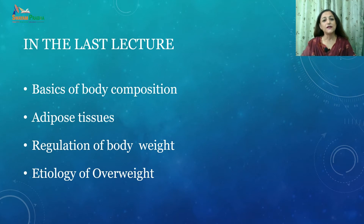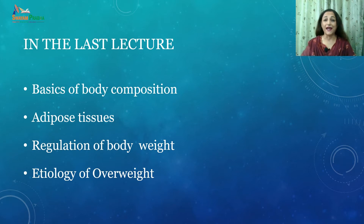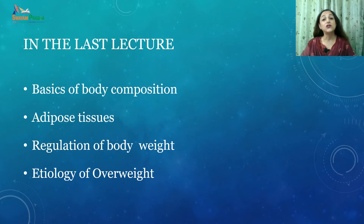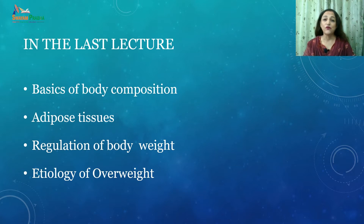In the first lecture, we studied about the basics of body composition — according to the two-compartment model, the body can be divided into fat mass and fat-free mass. We studied about adipose tissues, their structure, location and type. After that, we studied about regulation of body weight: short-term regulation and long-term regulation. Then we moved to overweight and studied about its etiology.